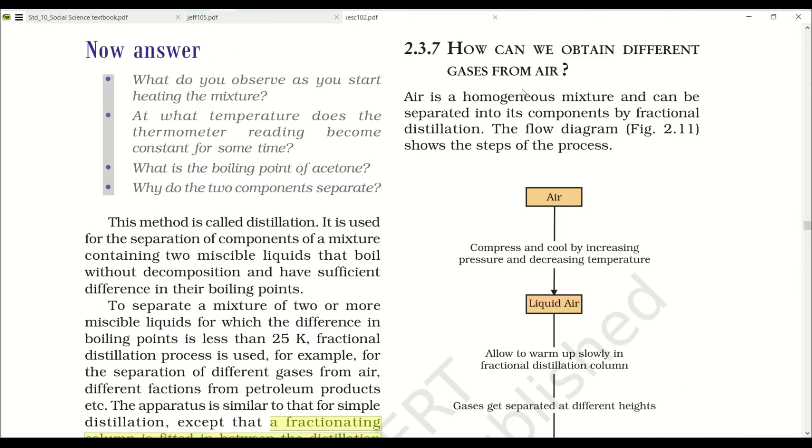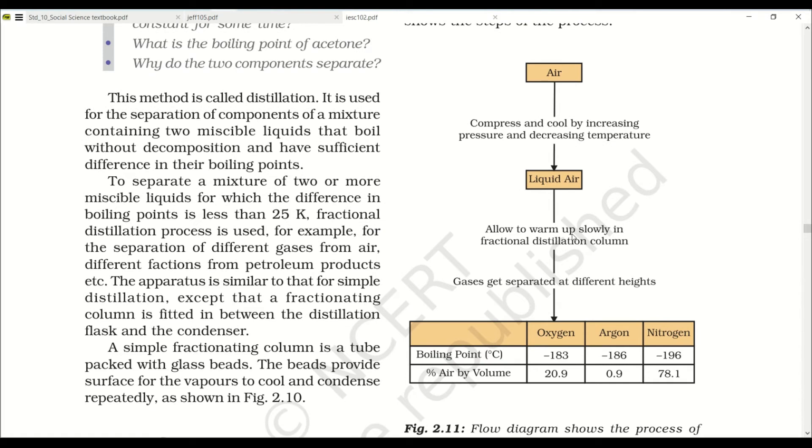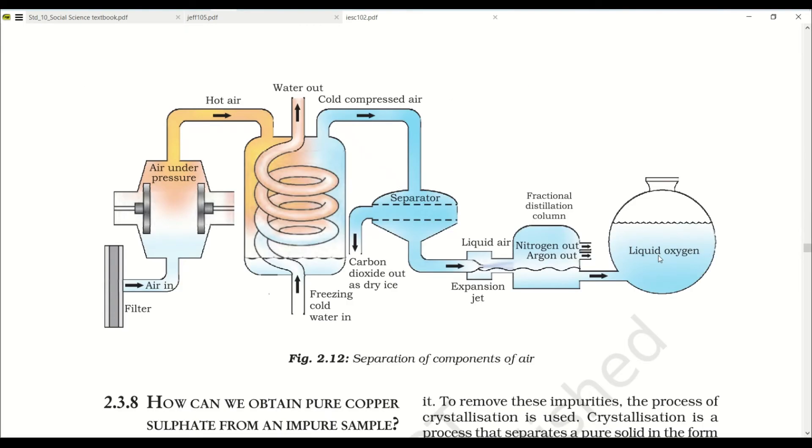How can we obtain different gases from air? Air is a homogeneous mixture and can be separated into its components by fractional distillation. The flow diagram shows the steps of the process. Air is compressed by increasing the pressure and cooled by decreasing the temperature to become liquid air. Liquid air is allowed to warm up slowly in the fractionating distillation column, and at that moment the gases of the air get separated. Here you can see oxygen, argon and nitrogen are separated. Liquid air is allowed to warm up slowly in the fractionating column where gases get separated at different heights depending upon their boiling points.